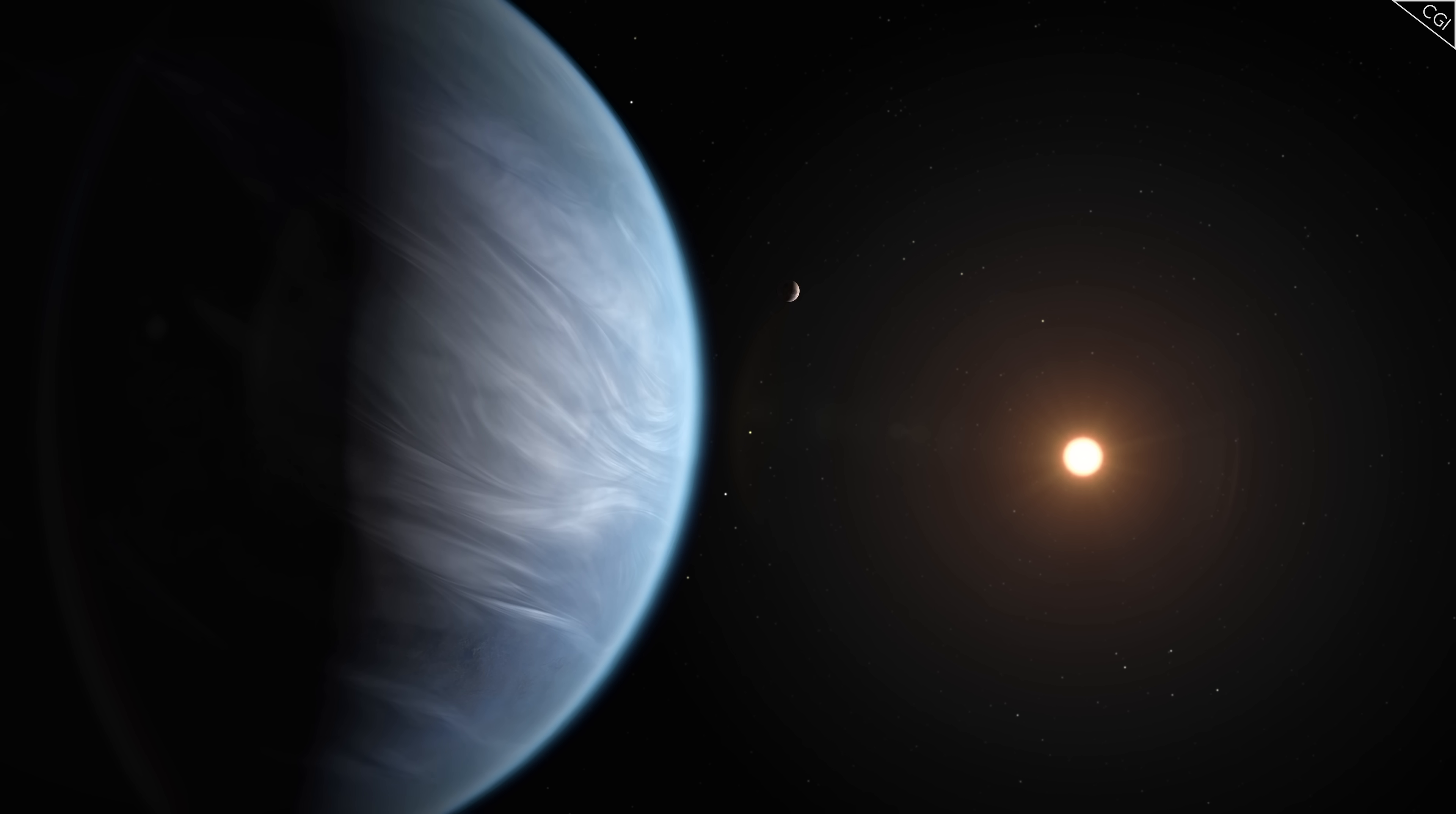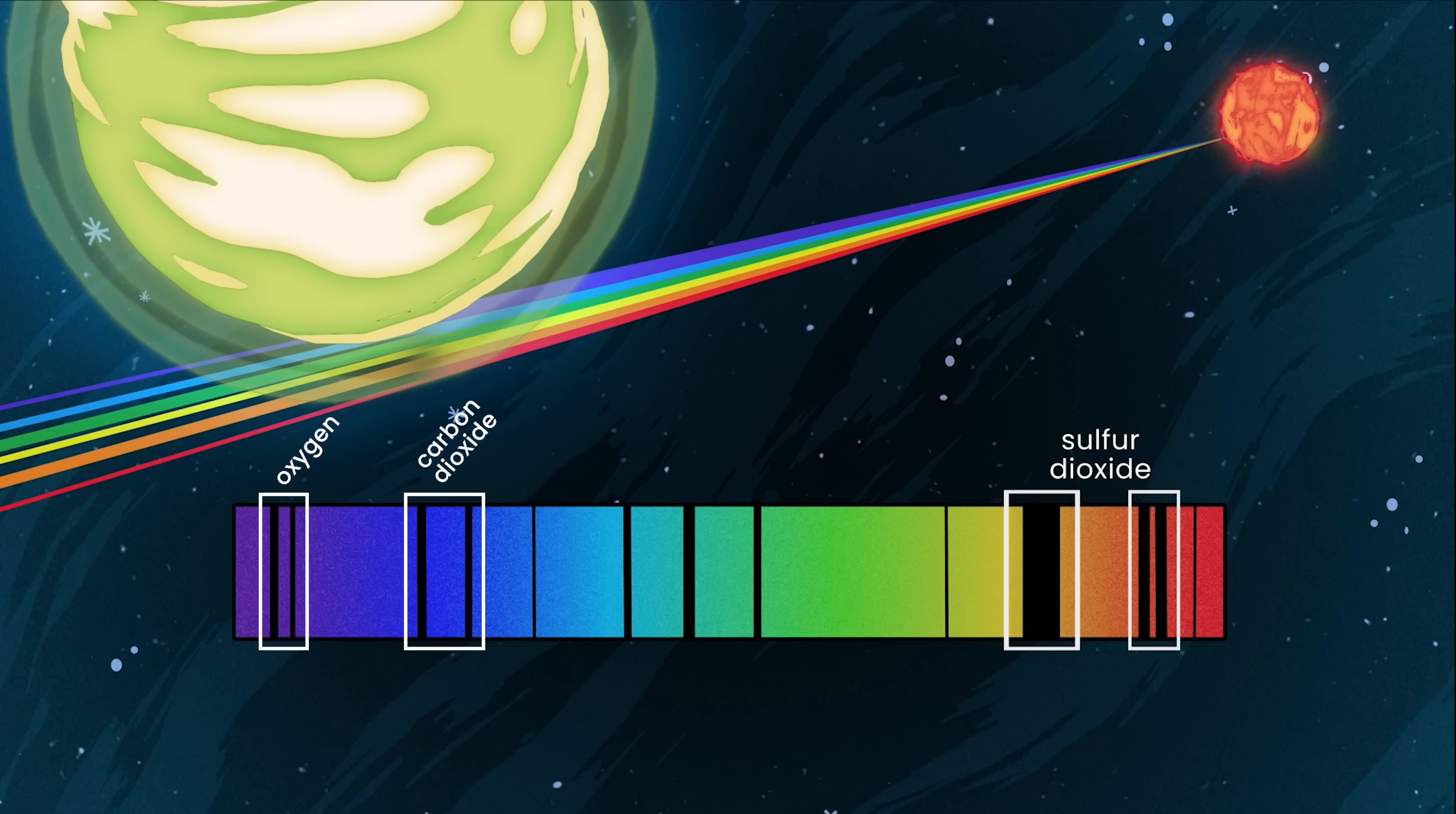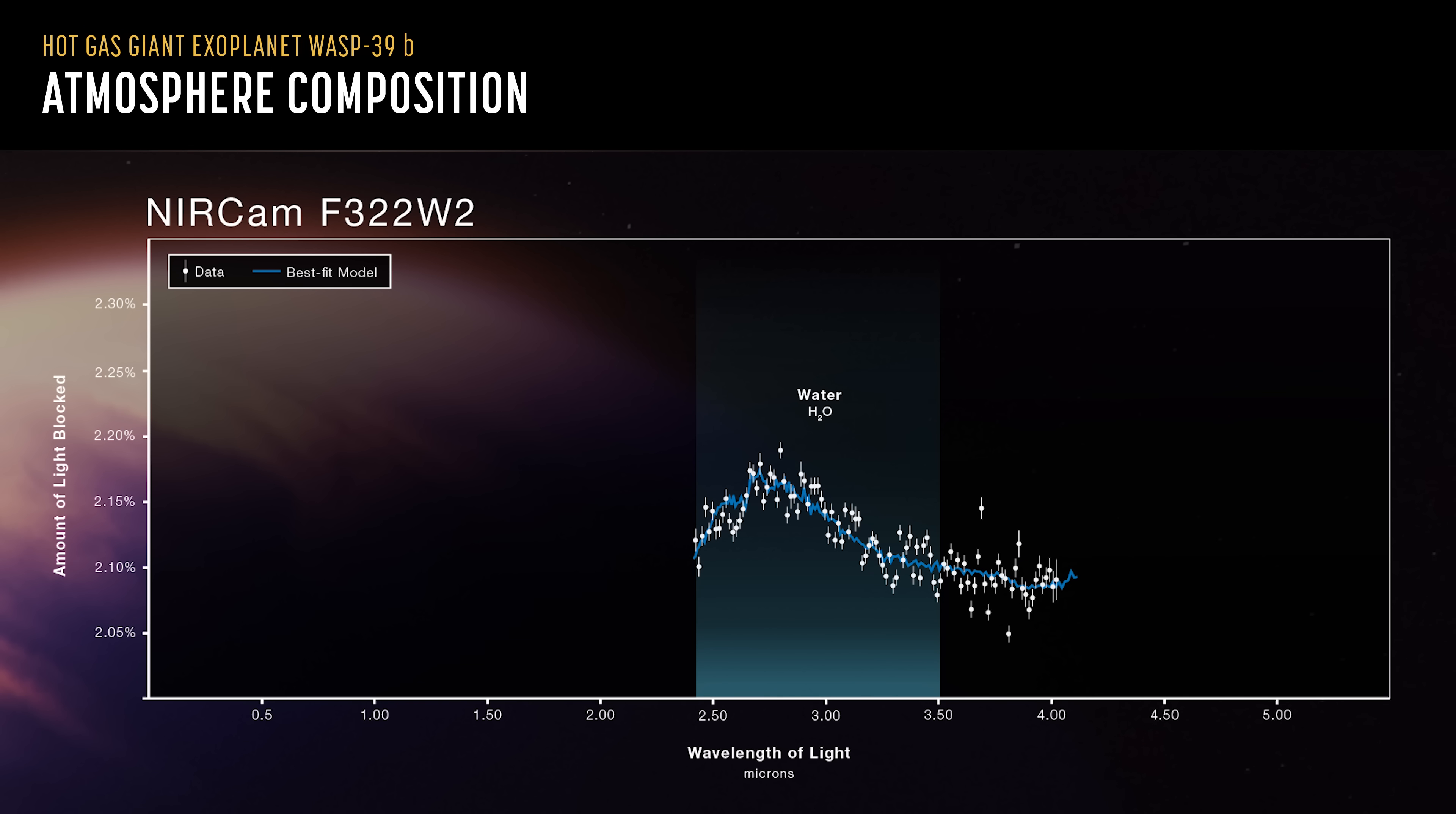Webb was able to discover the chemical makeup of one such exoplanet, WASP-39b, a Jupiter-sized exoplanet 700 light-years away from us, by waiting until it passed in front of its own star. Light from the star filtered through the planet's atmosphere, where the gases within absorbed the light at certain frequencies, leaving their distinct fingerprints on what remained. Webb detected sulfur dioxide in WASP-39b's atmosphere, the first time this compound had ever been seen in an atmosphere outside of our solar system. Webb also provided a complete breakdown of all other chemicals and elements present, including some water vapor.